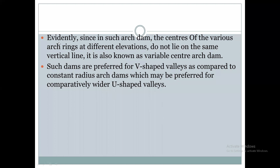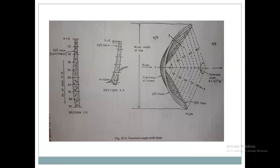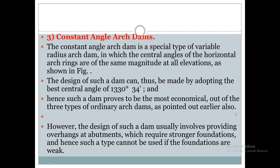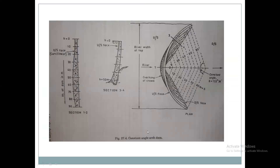The shape of the valley determines the dam type. If the valley is V-shaped, variable radius arch dams are preferred. If the valley is U-shaped, constant radius arch dams are preferred. The last type is constant angle arch dams. In these dams the central angle is constant — specifically 133 degrees 34 minutes — but the radius is variable. Therefore it is called a constant angle arch dam.